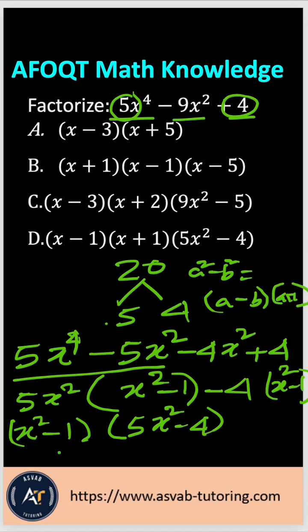If you do that, that gives you x minus 1 times x plus 1 times 5x squared minus 4. So that is the correct answer option, option D.